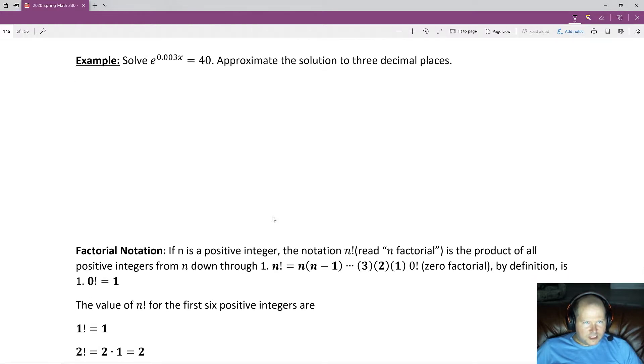Next problem is solve e to the 0.003x power is equal to 40. So let's bring that down. e to the 0.003x is equal to 40. Now, because there's an e here, we want to use a natural log. Whatever we do to one side, we do to the other. So we take a natural log of both sides, and that's so I can pull this variable to the front.